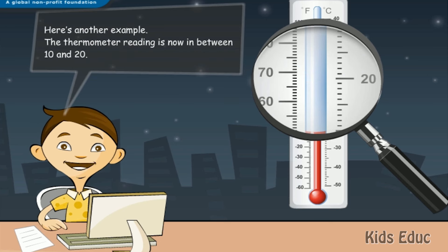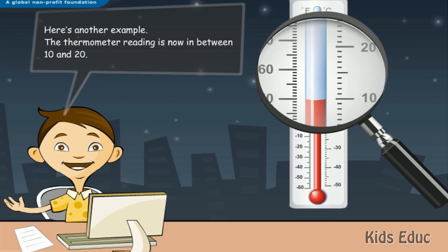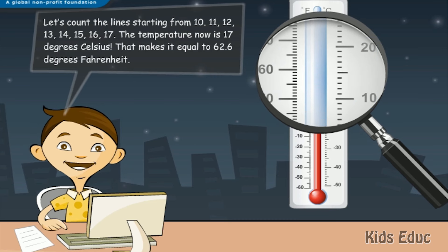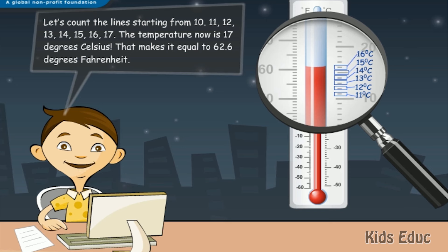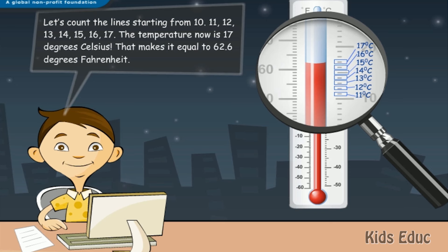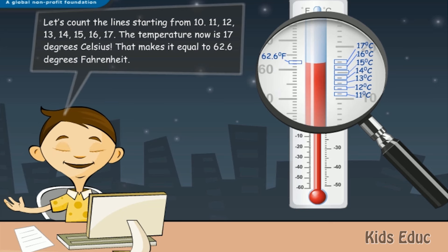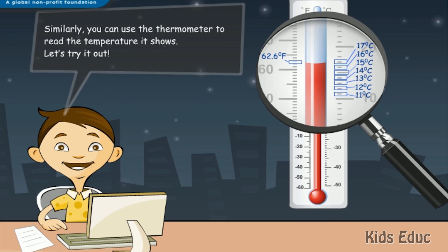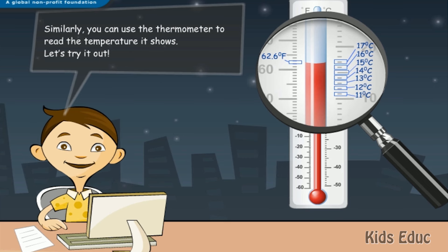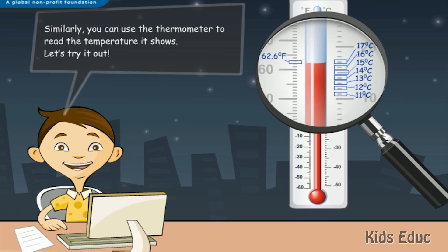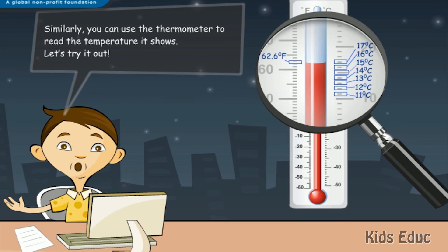Here's another example. The thermometer reading is now in between 10 and 20. Let's count the lines starting from 10: 11, 12, 13, 14, 15, 16, 17. The temperature now is 17 degrees Celsius, that makes it equal to 62.6 degrees Fahrenheit. Similarly, you can use the thermometer to read the temperature it shows. Let's try it out.